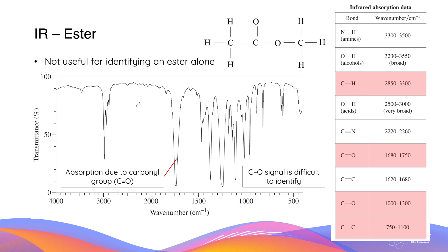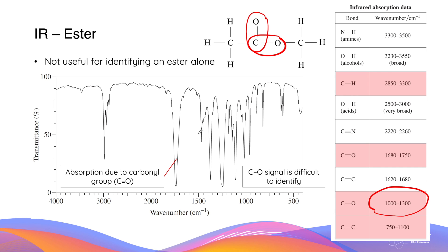An ester molecule has two characteristic bonds: a carbonyl C=O bond and a C–O single bond. Like every other carbonyl group, the C=O double bond can be easily identified in the middle of the infrared spectrum. However, the C–O bond, since it's in a much lower wave number range of 1000 to 1300, is often buried and hidden within multiple other major absorptions. As a result, the C–O signal is difficult to identify, and therefore infrared spectroscopy is not useful for identifying an ester molecule when used alone.